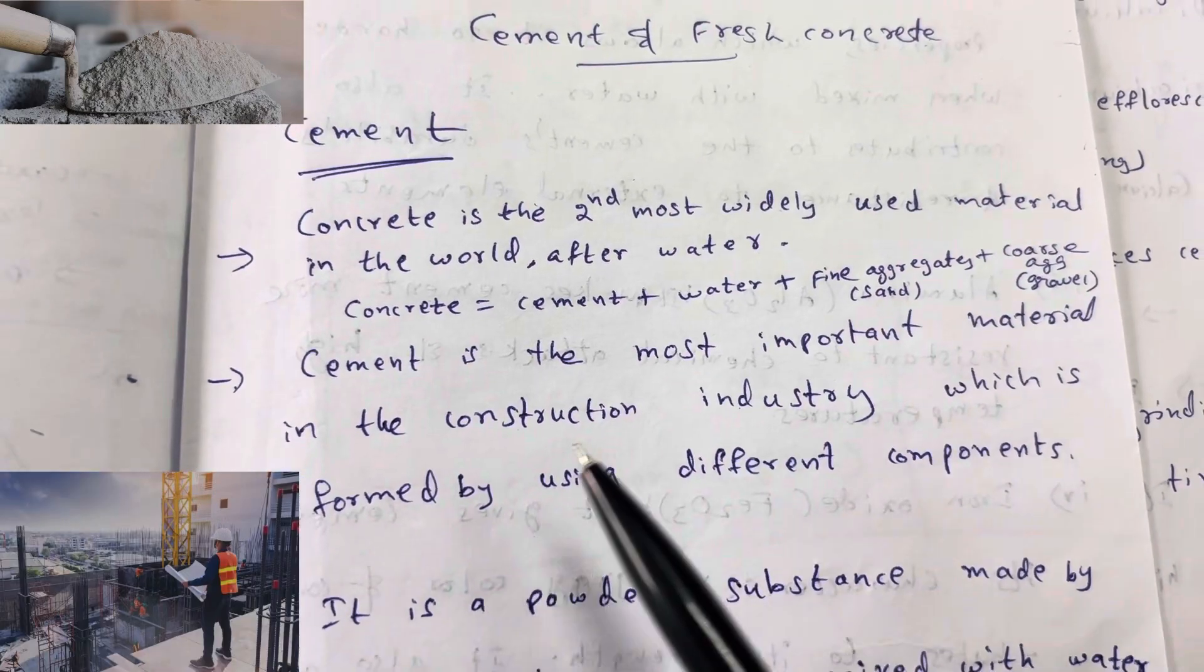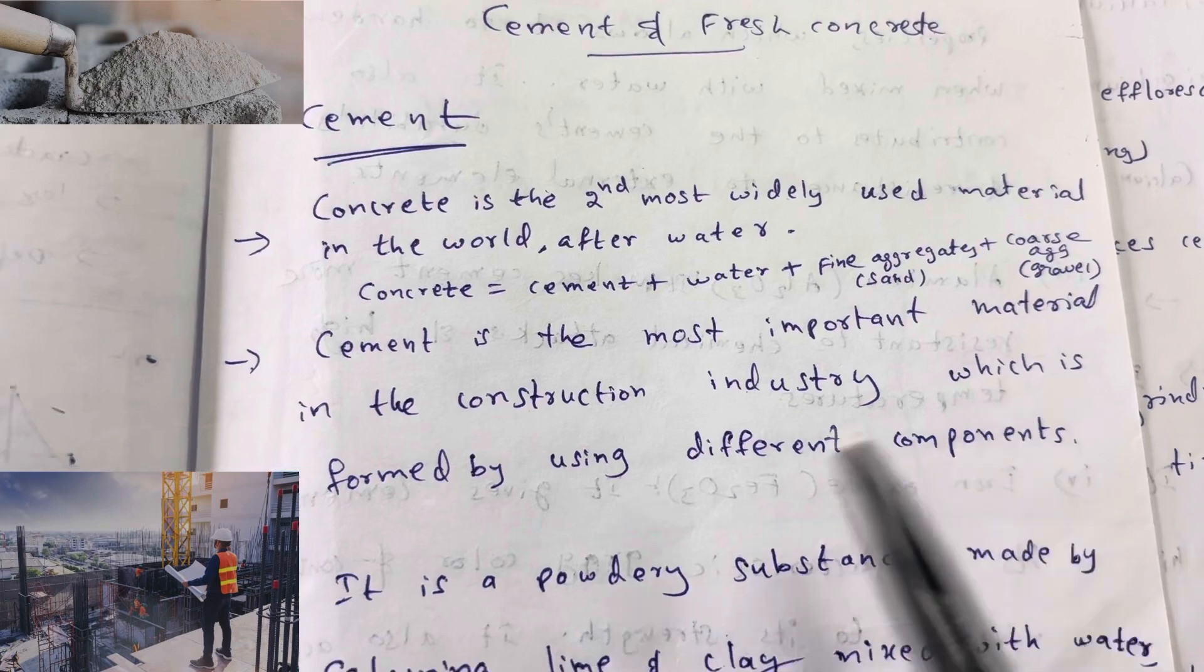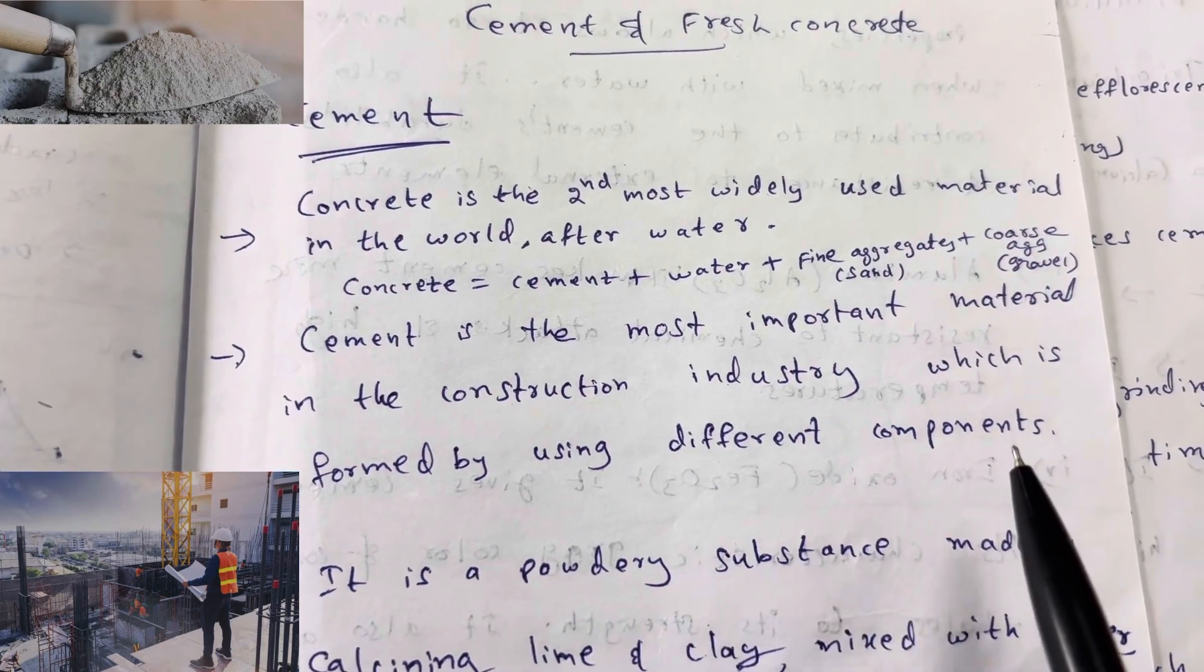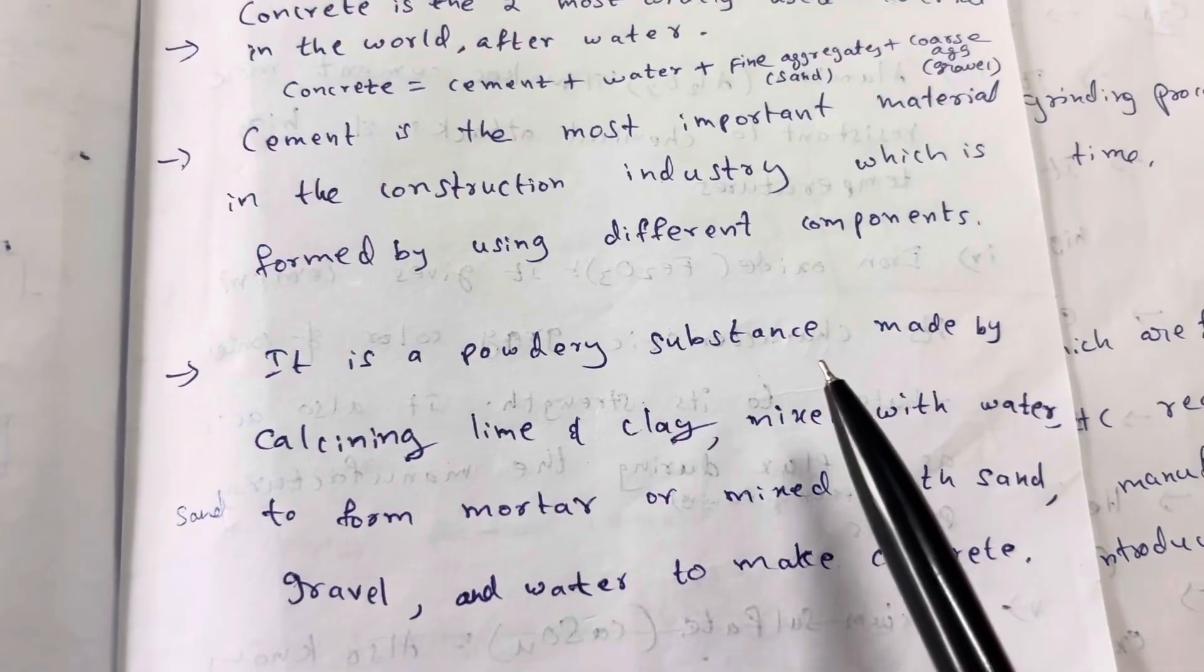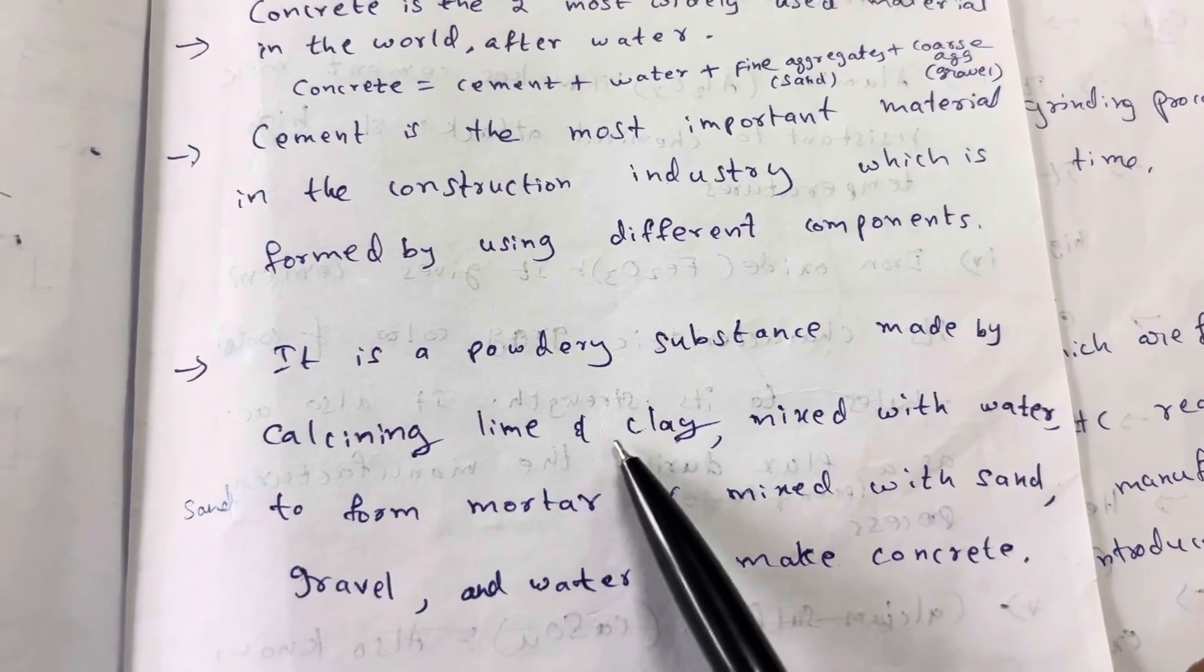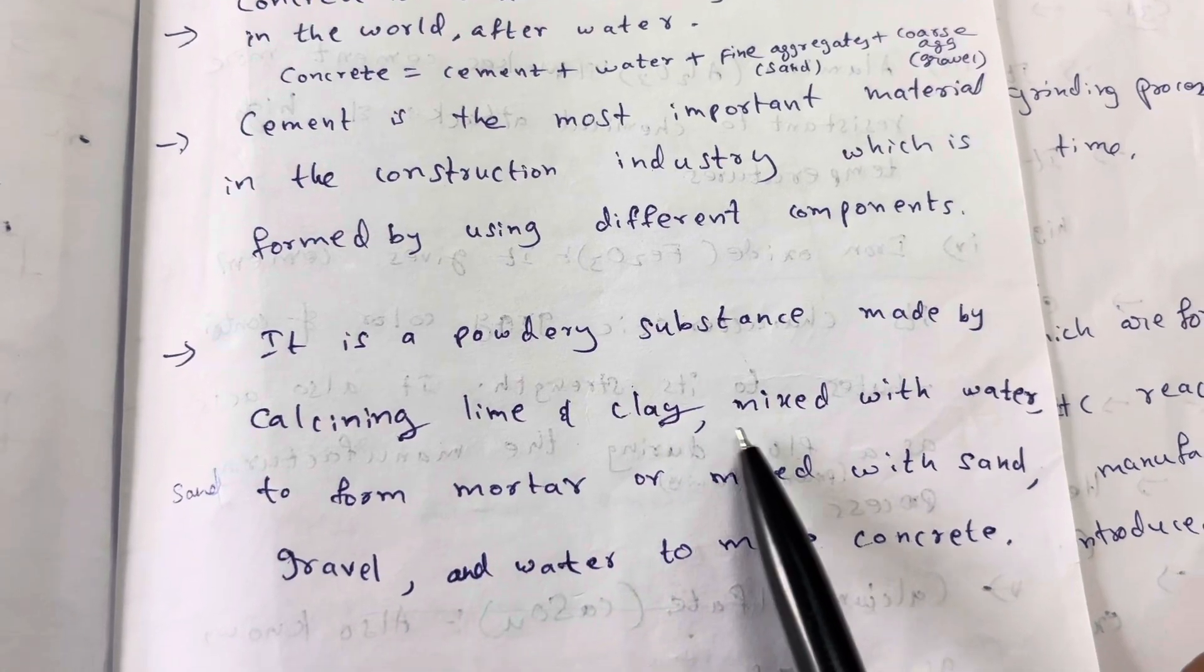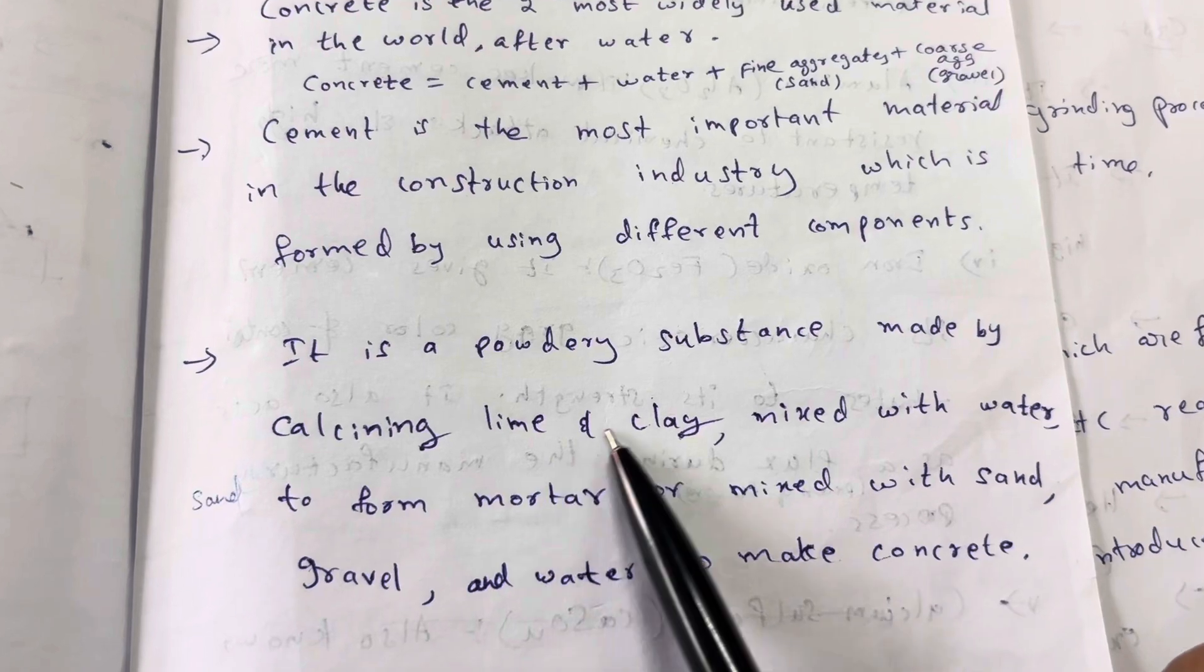Cement is the most important material in the construction industry. Without cement there is no construction. Cement is formed by using different components. It is a powdery substance made by calcining lime and clay, mixed with water.